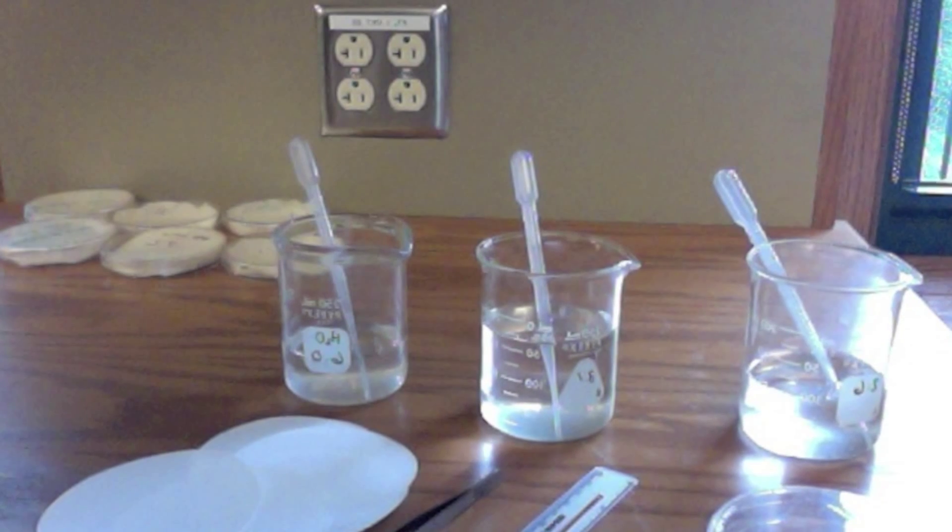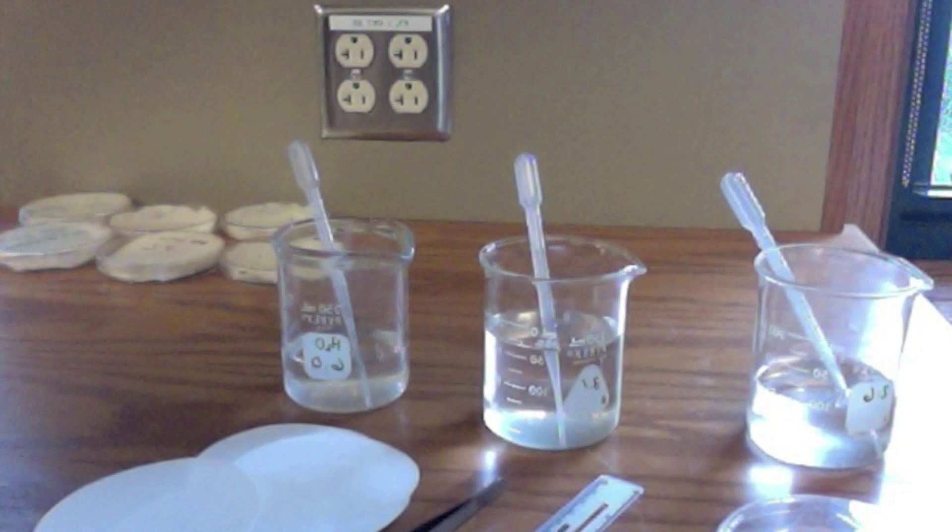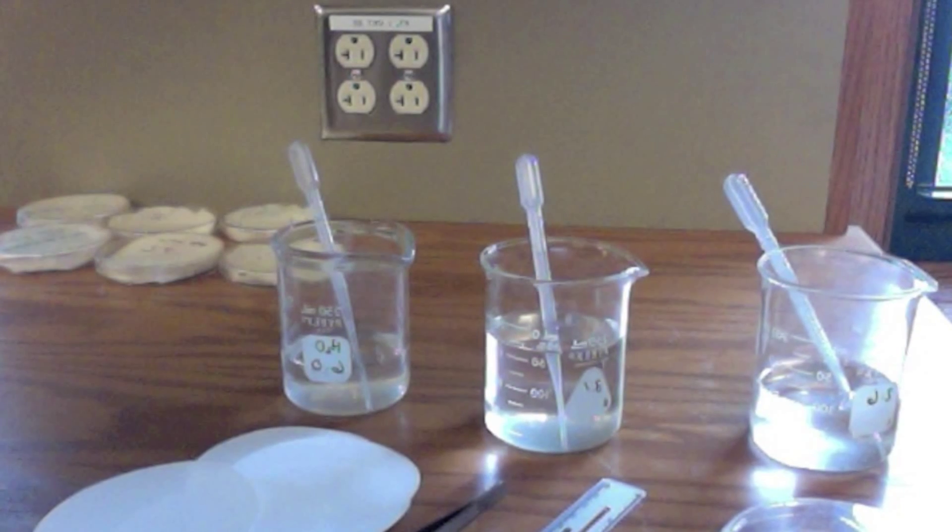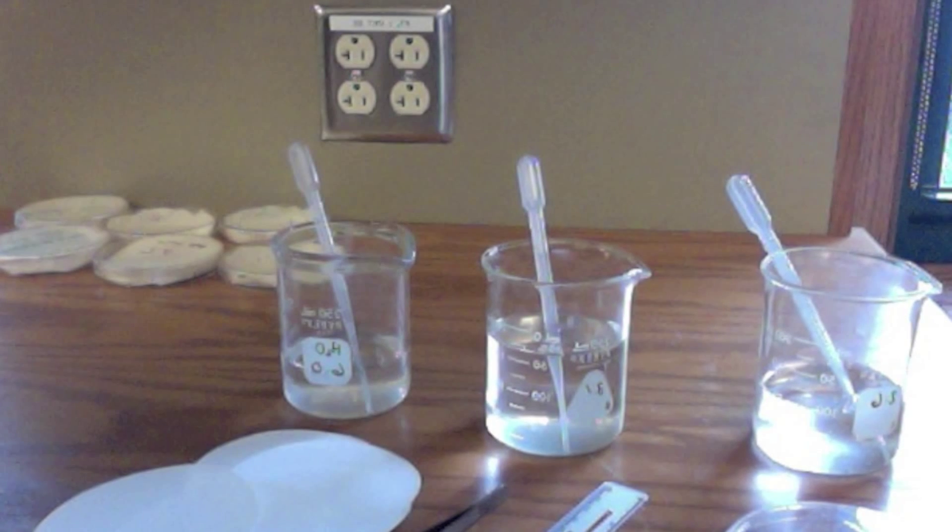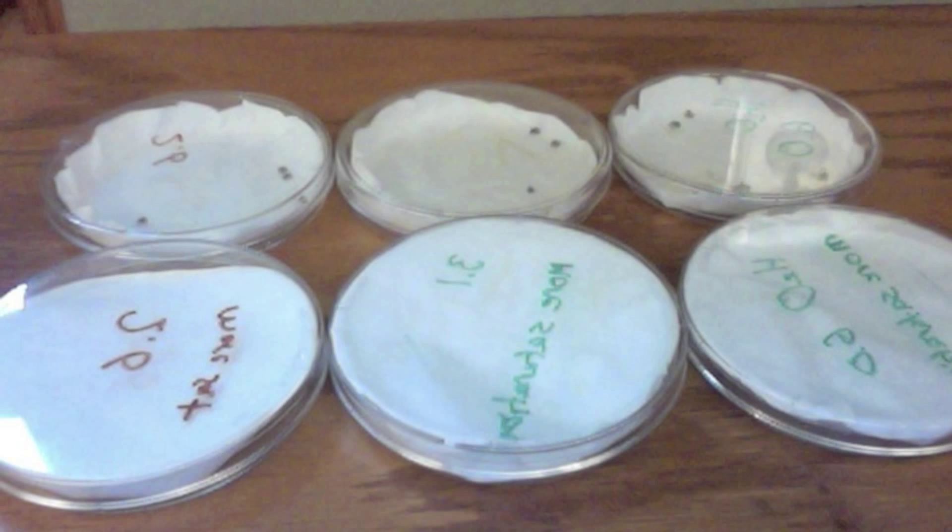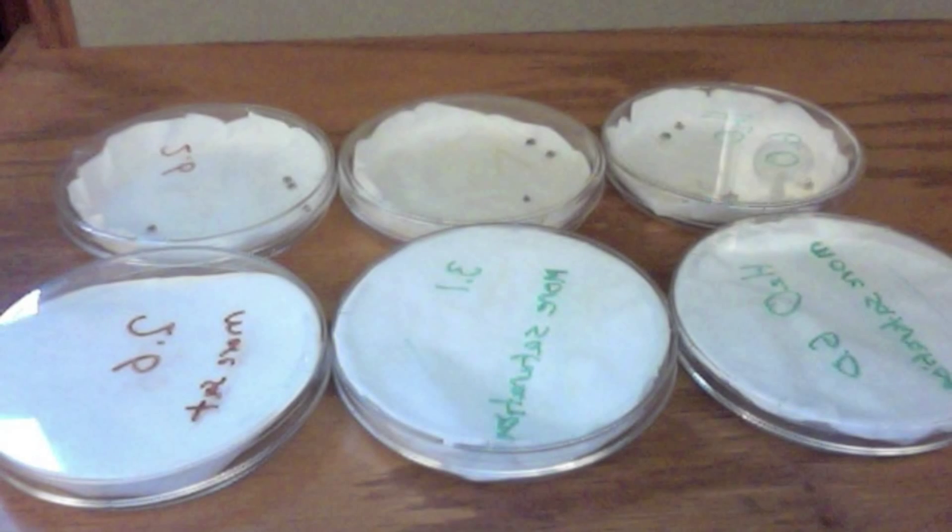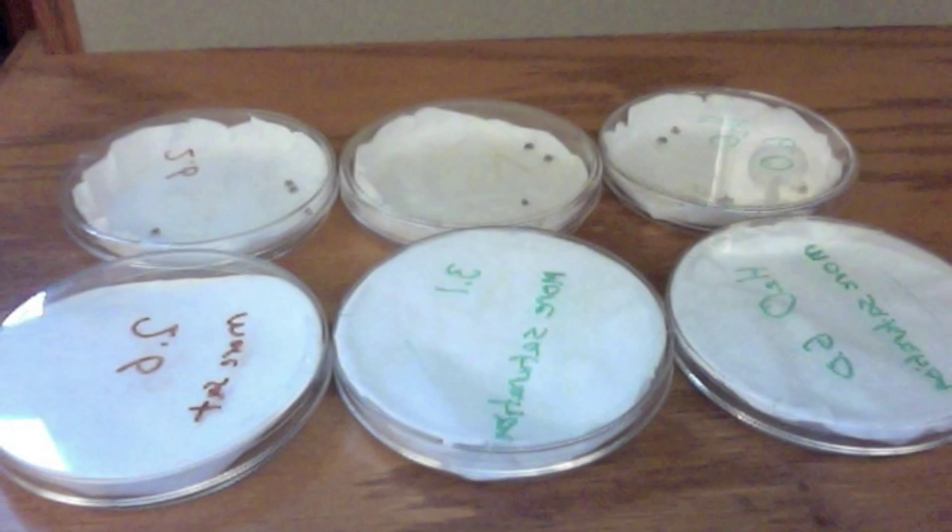We added 1 ml of the designated solution to saturate the seeds in each dish via the pipettes. 3 of the dishes with the filter paper below and over the seeds got 2 ml. The other, with the filter paper just below the seeds, only had 1 ml. Each solution then had 2 dishes of different saturation levels.